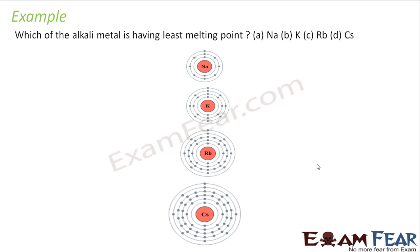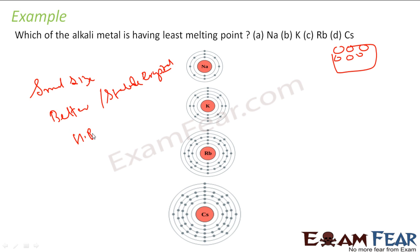Which alkali metal has the highest melting or which has the least melting point? As I told here, smaller is the size, smaller size means better crystal or stable crystal. Because you can form crystals better with the smaller size.